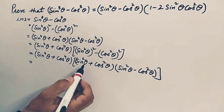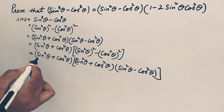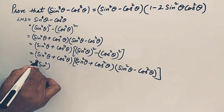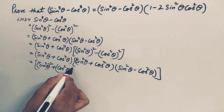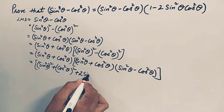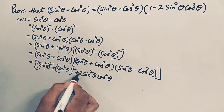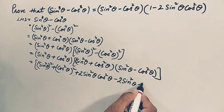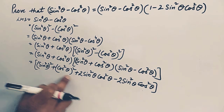Now, sin²θ plus cos²θ equals 1, so we write 1 there. For the sin⁴θ plus cos⁴θ part, we complete the identity a² plus b² plus 2ab. We write sin⁴θ as (sin²θ)² and cos⁴θ as (cos²θ)², then add 2·sin²θ·cos²θ. Whatever we add, we also subtract, so we write minus 2sin²θcos²θ — there is no change in the expression.